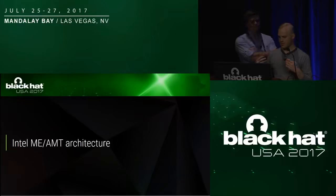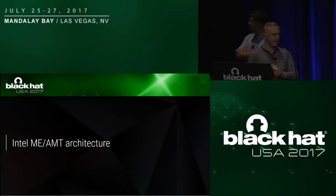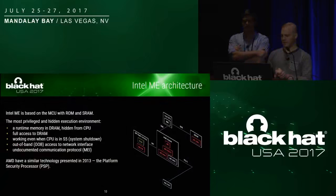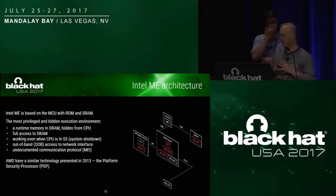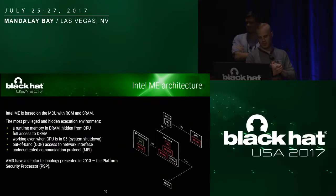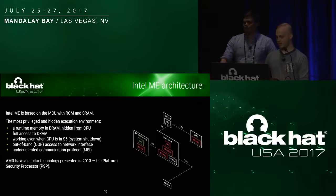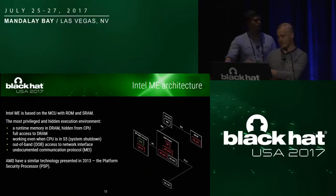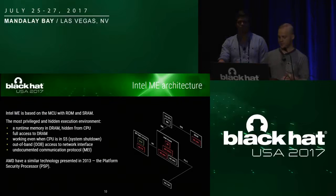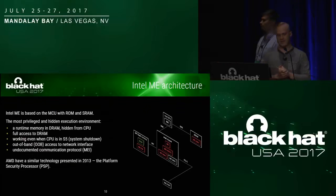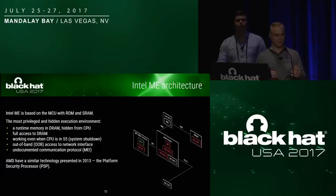Now we're going to go into more depth with the Intel ME AMT architecture. Besides the management engine memory control unit, this subsystem consists of a MAC-level controller, host embedded controller interface, unified memory architecture, and firmware stored in the common SPI flash alongside the BIOS. This subsystem is considered the most privileged and hidden execution environment. The unified memory architecture is hidden from the CPU. Additionally, it has full access to DRAM and out-of-band access to the network interface. Most interestingly, Intel ME still works and is accessible even if the device is turned off, as long as it remains plugged into an outlet.